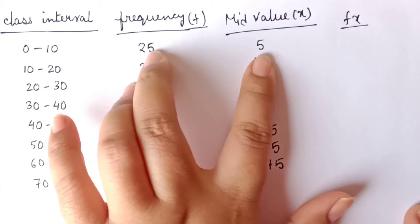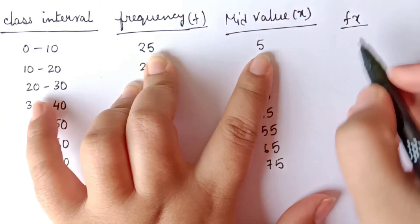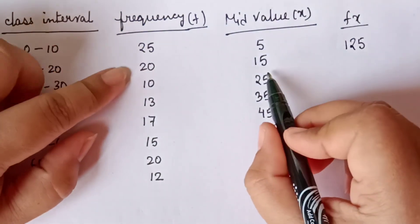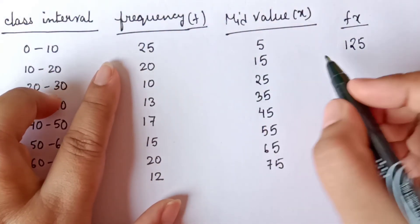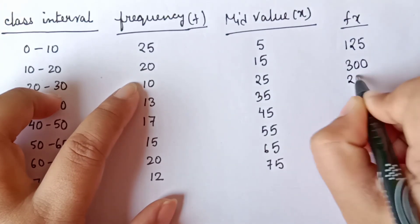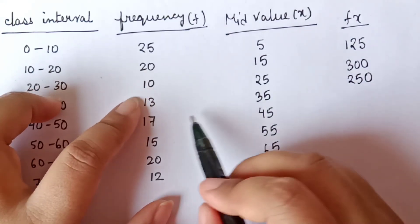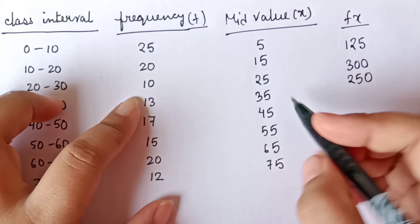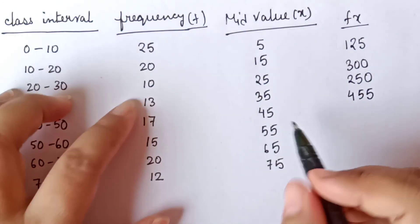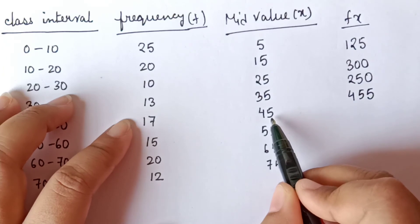So first, 25 into 5, the value is equal to 125. Then 20 into 15, the value is equal to 300. 10 into 25, value equals 250. 13 into 35, value equals 455. Then 17 into 45.